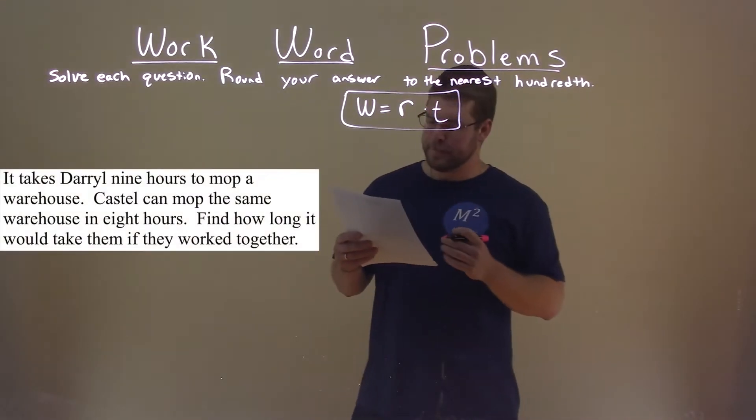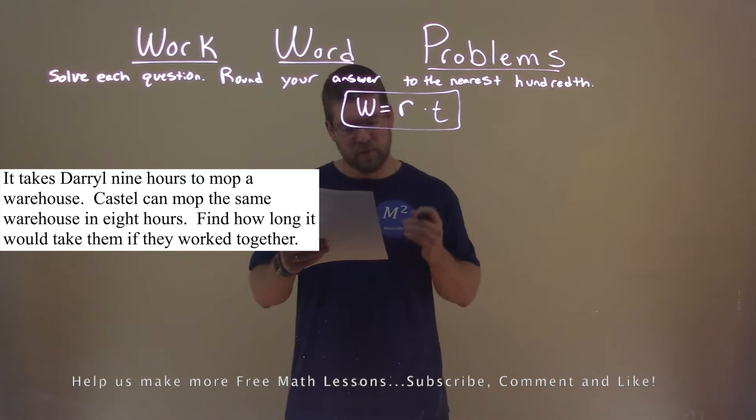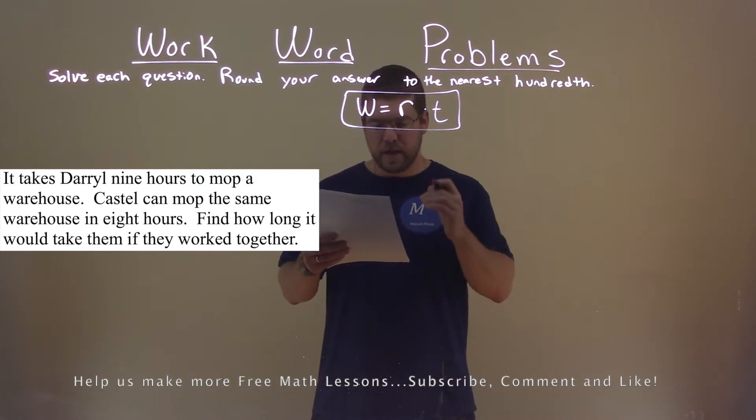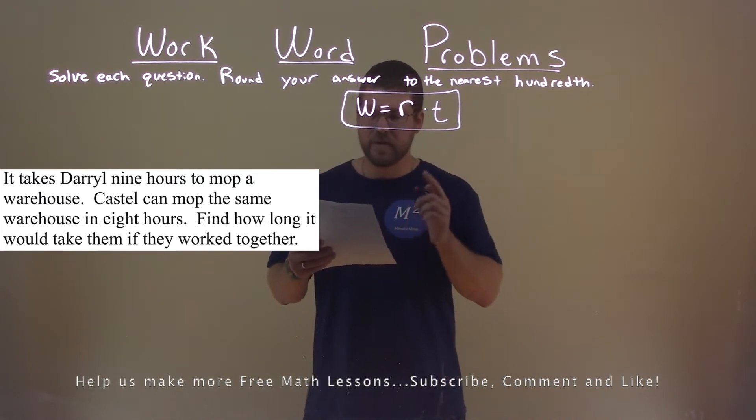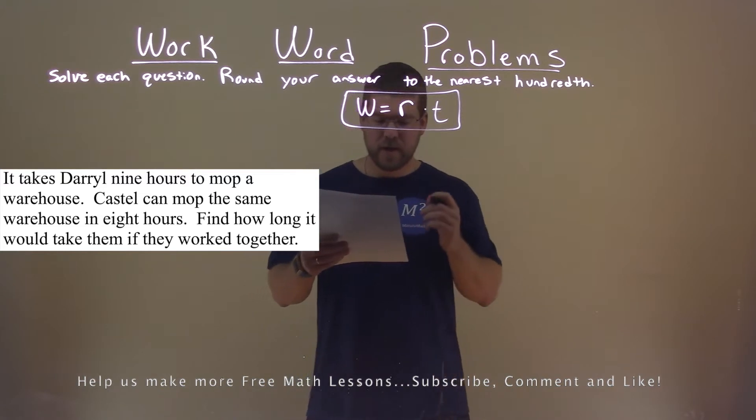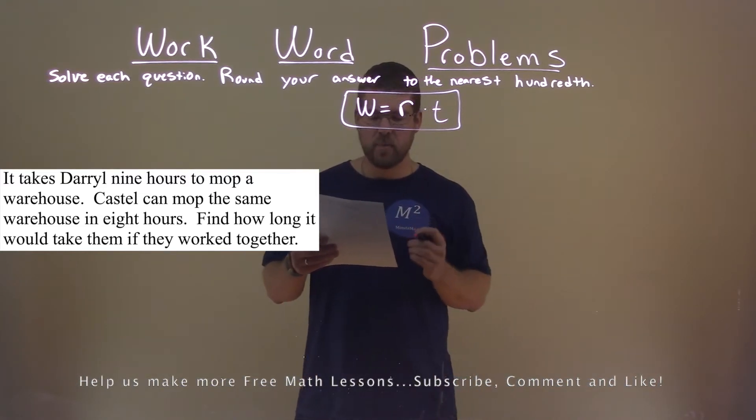We're given this problem right here. It takes Daryl nine hours to mop a warehouse. Castle can mop the same warehouse in eight hours. Find how long it would take them if they worked together.